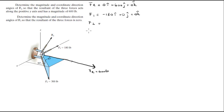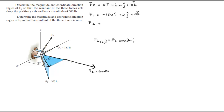Now F2 is what we're going to find. F2 has a projection in the x and y plane, which we find by doing F2 cosine of 30 degrees, and that equals 259.